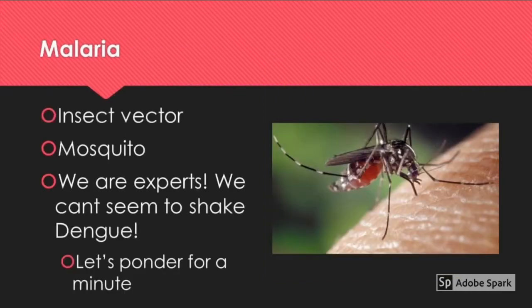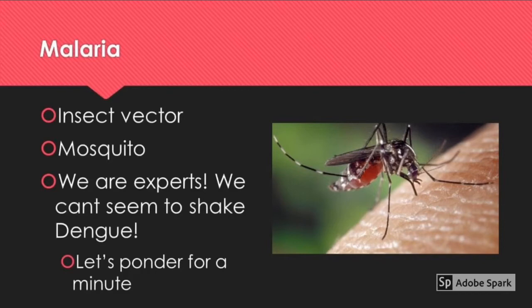Moving to page 203 of the textbook, you'll be introduced to malaria. Malaria is an insect vector disease, meaning it's transmitted through insects — specifically mosquitoes. In tropical areas we are the experts in mosquito control, constantly fighting this problem, similar to dengue. The mosquito must bite someone who is infected, absorb their blood, and then bite someone else — that's how malaria is transmitted.